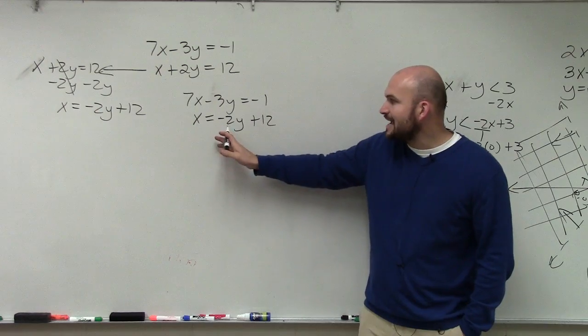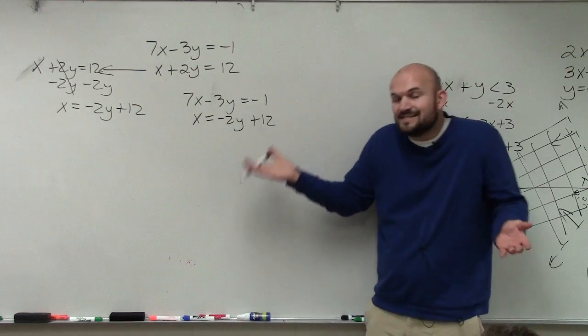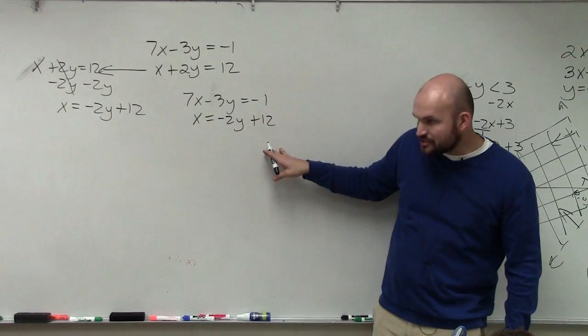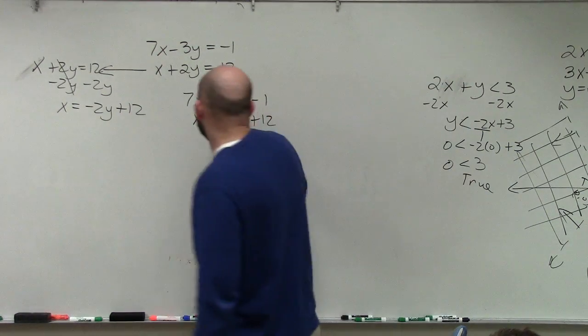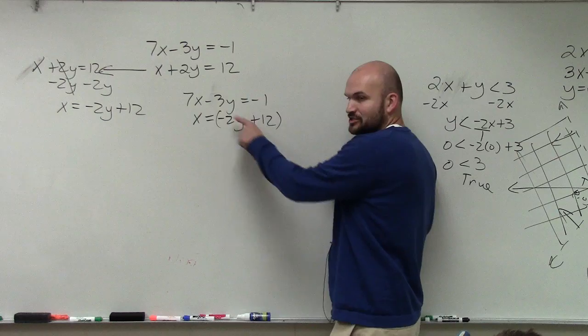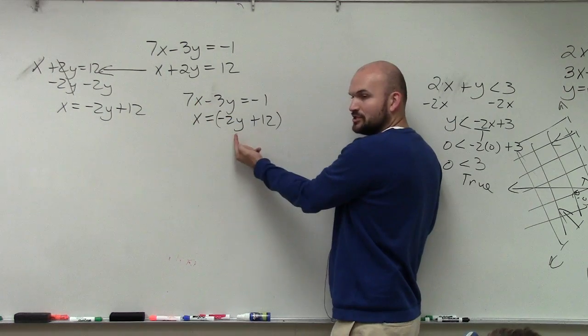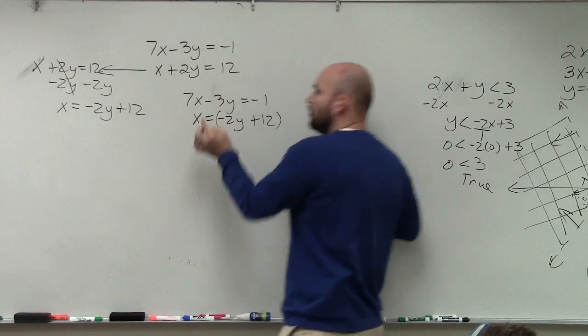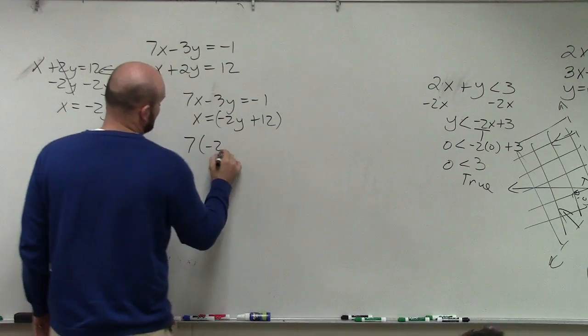The value of x is now negative 2y plus 12. It's nice when it's just a number, because you just plug in the number. But now it's an expression. So now we have to plug in that whole expression in for x. If this was just a number, you would put the number in for x. Now it's an expression, so you put the whole expression in for x.